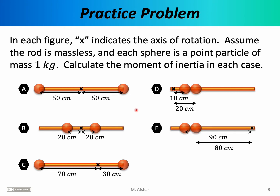In each figure below, x indicates the axis of rotation. Assume the rod is massless and each sphere is a point particle of mass one kilogram. Calculate the moment of inertia in each case. We're going to consider five different scenarios. In each case, we have a relatively light rod whose mass is negligible, and two relatively heavy spheres each with a mass of one kilogram. The total mass of the object is the same in all five scenarios.